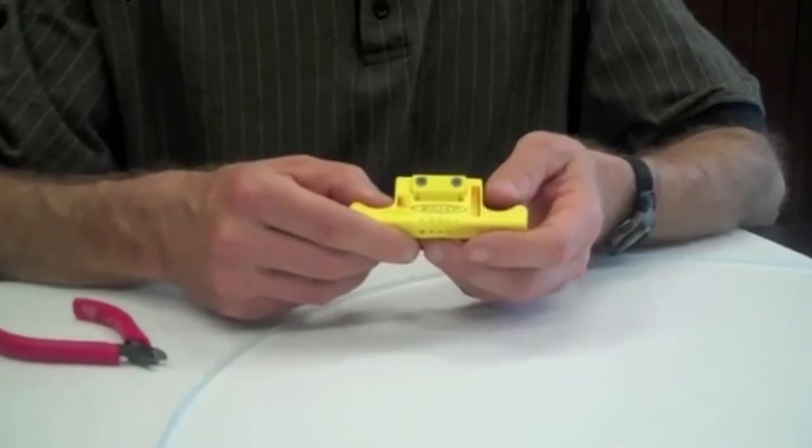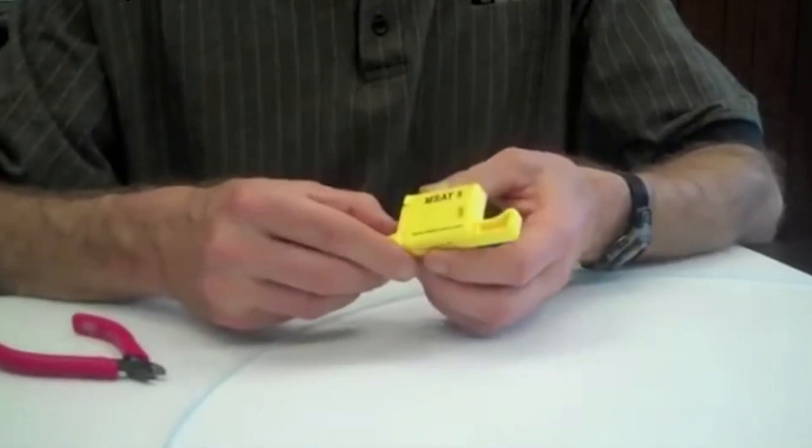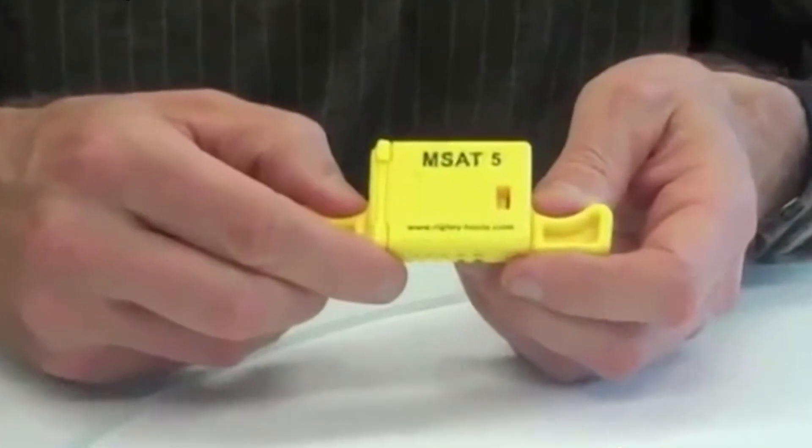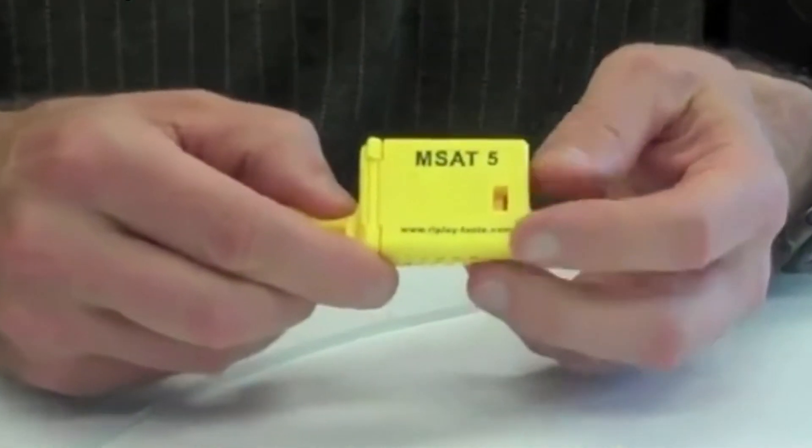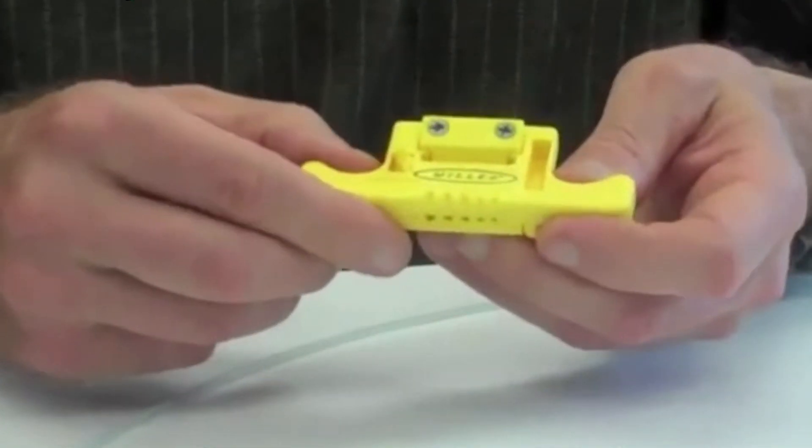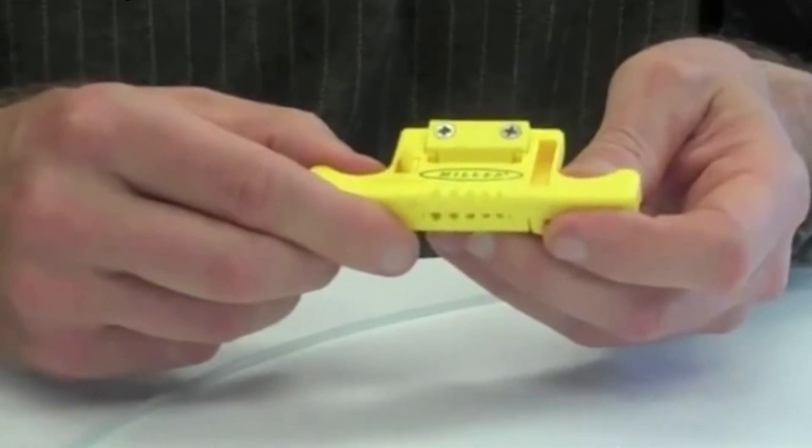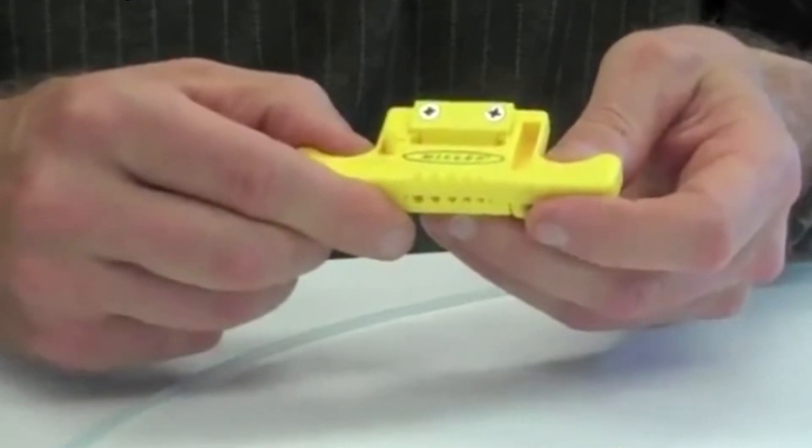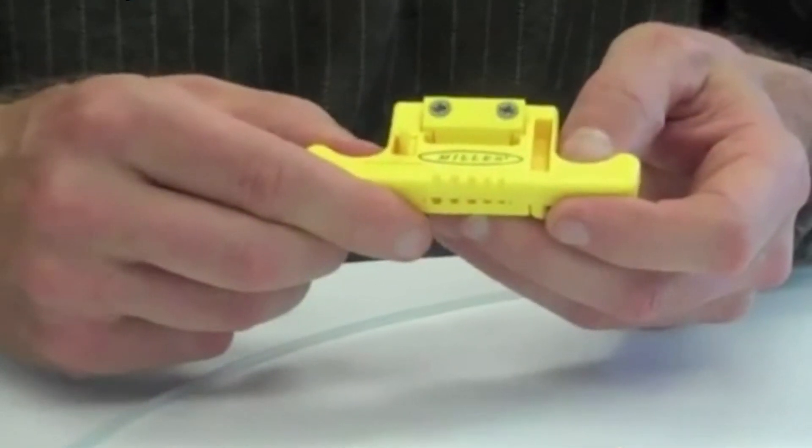The MSAT5 is manufactured of high-density polymer and designed to access multiple loose-tube buffer sizes with no adjustment required. With five stripping channels ranging in size from 1.9 to 3mm, the MSAT5 offers unique versatility and value not available in other tools.